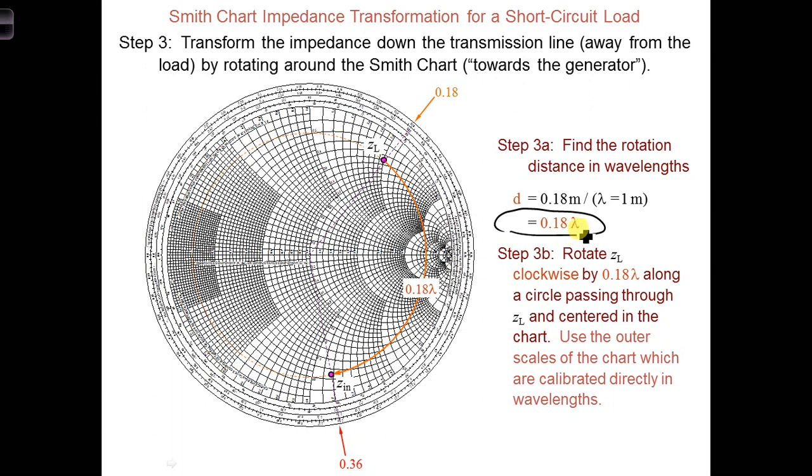We want to rotate this distance towards the generator. So remember this scale, towards the generator is in the clockwise direction, and we want to rotate 0.18 lambda. So you'd read off the value here. If you draw a straight line from the middle, which is where you're rotating around, read off the value on the outside of the Smith chart and then add 0.18.